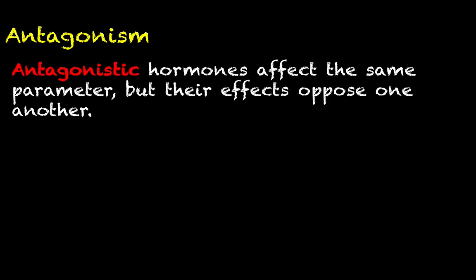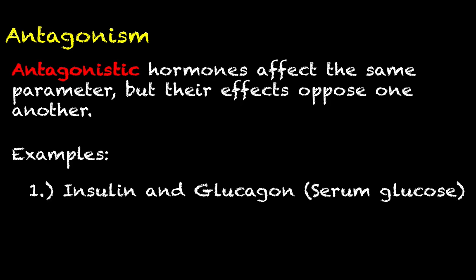The final type of interaction is antagonism. Antagonistic hormones affect the same parameter, but their effects oppose one another. The best example we will look at in a couple of videos is insulin and glucagon. Both are secreted by the pancreas — albeit different parts of the pancreas — and they both have effects on the amount of glucose in the blood.